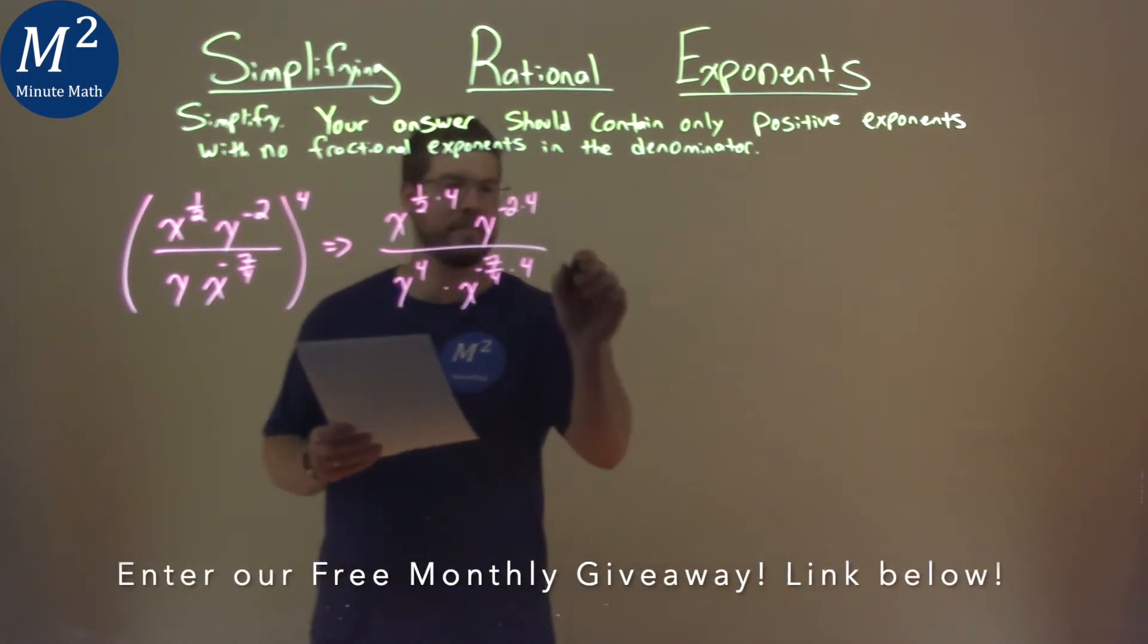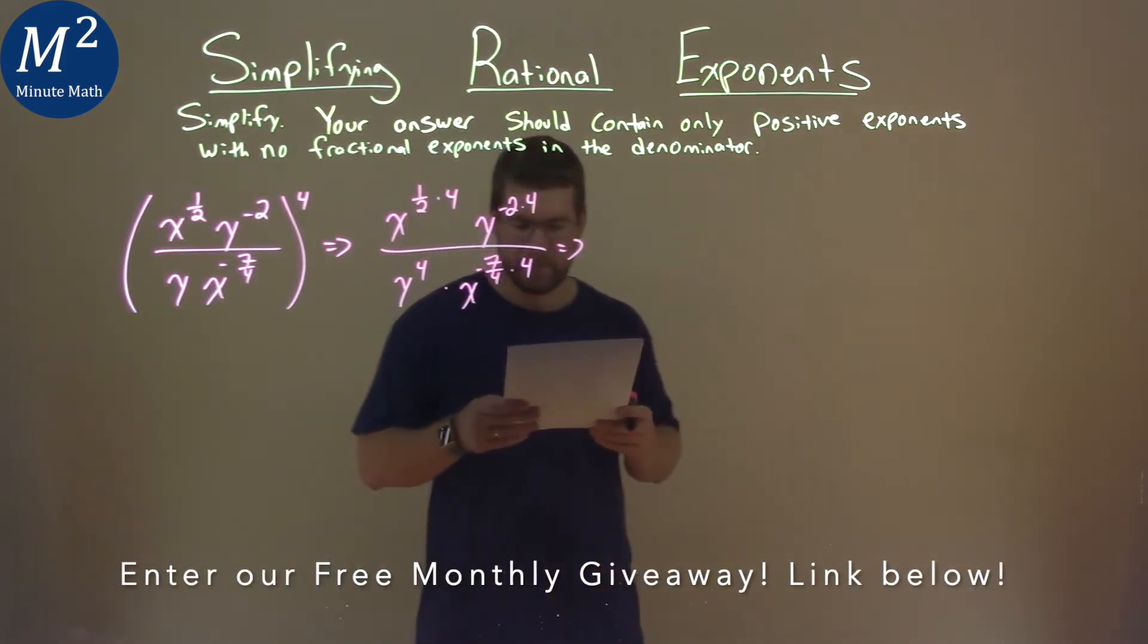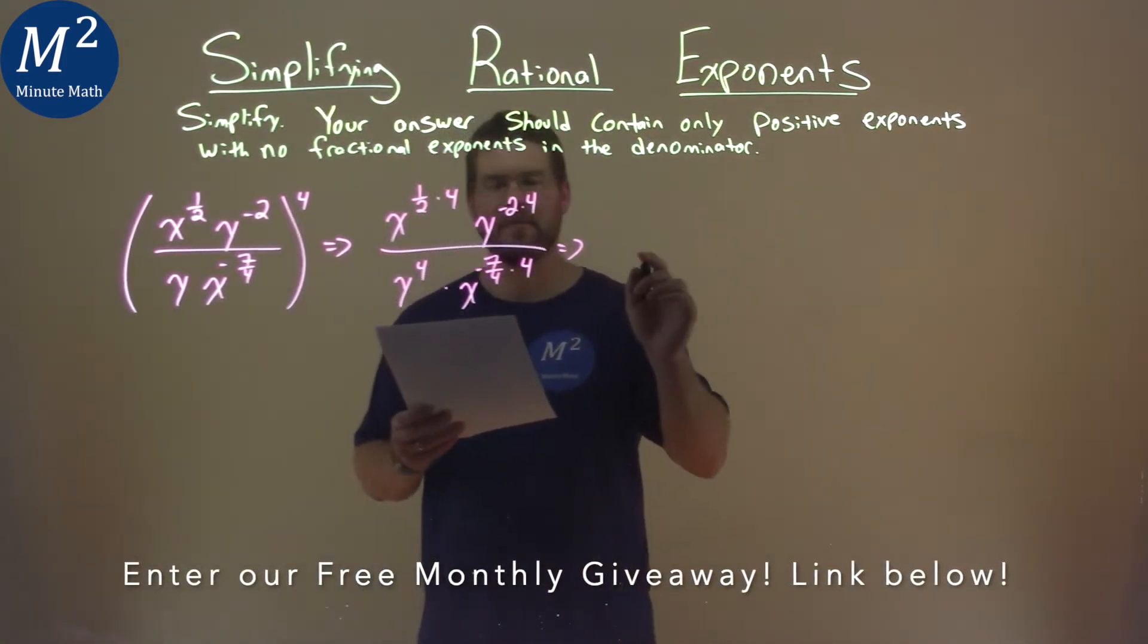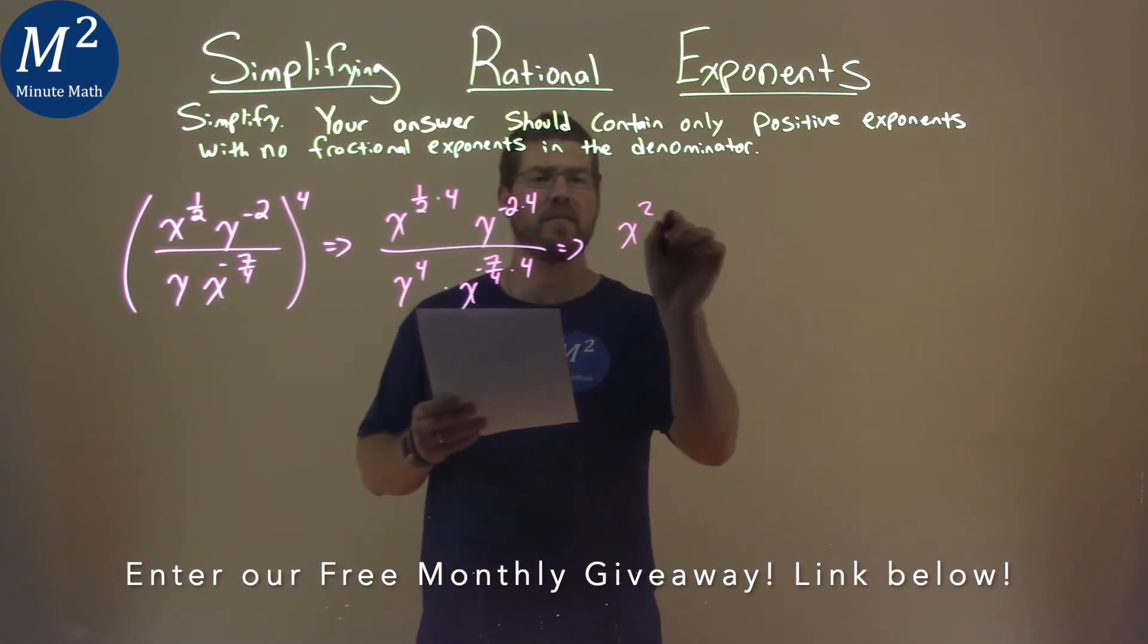Now comes the fun part. Let's go. Well, 1 half times 4 is easy as 2. So we have x to the second power,